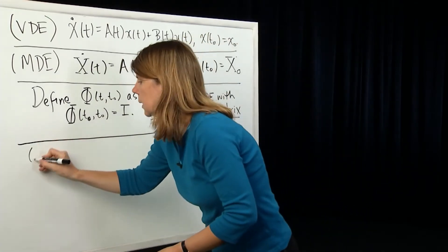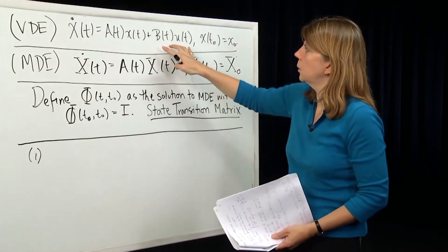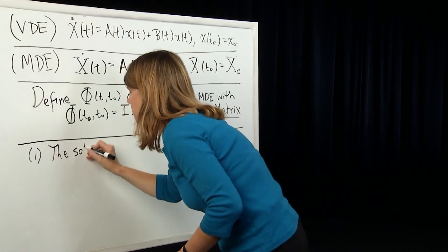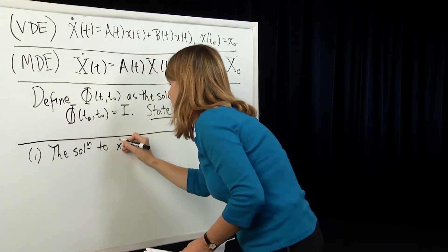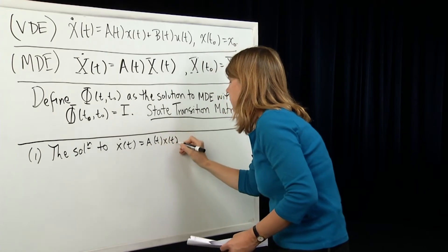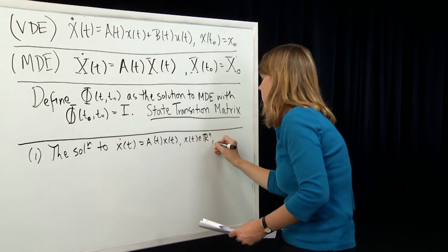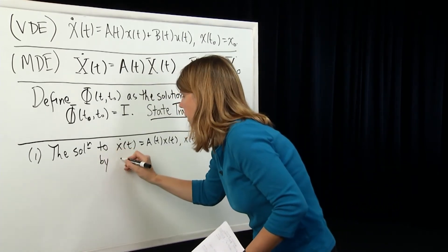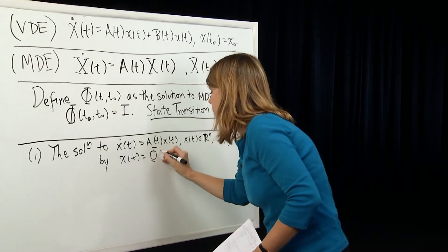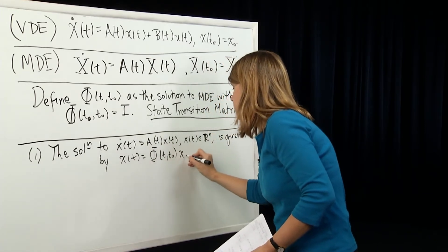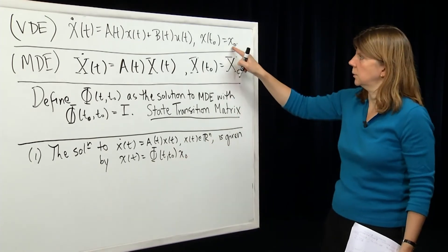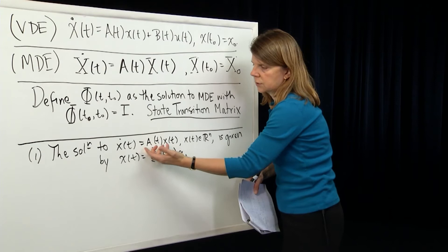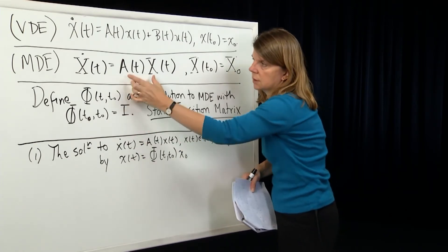The first property: if you look at the vector differential equation with the input zeroed out — x-dot equals A(t)x, where x(t) is a vector in Rⁿ — the solution is given by x(t) equals Φ(t, t₀) times the initial condition x₀. So the solution to the vector differential equation is a function of the solution of the matrix differential equation multiplied by the initial state. This requires proof.